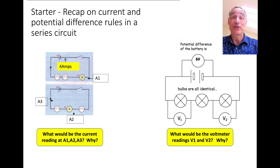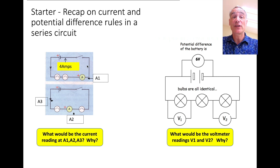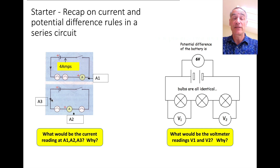Today we can look at how we model series circuits. First of all, I want you to do this starter linking back to last lesson. We have a series circuit here with 4 amps flowing out. I want to know what the ammeter would read before that bulb, what the ammeter would read between the bulbs, and what the ammeter would read after the bulb here.